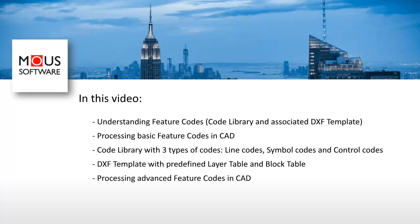In this video we will cover the following topics. First, we start with understanding feature codes — how you can use the point descriptions measured outside in the field as feature codes. We will take a look at the code library and the associated DXF template, and see how the MCNX software uses these feature codes to automatically create a CAD drawing. Then we will take a brief look at how to process some basic feature codes in CAD to get a quick overview of the workflow.